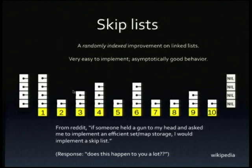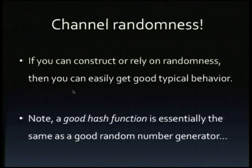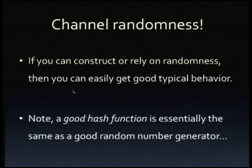There's a great Reddit quote on skip lists: 'If someone held a gun to my head and asked me to implement an efficient set or map storage, I would implement a skip list.' The response: 'Does this happen to you a lot?' The lesson from skip lists is: channel your randomness. If you can construct or rely on randomness in your dataset or algorithm, you can easily get good typical behavior, even if worst-case behavior when you analyze the algorithm is really bad. A good hash function is essentially the same as a good random number generator — it takes a seed and generates a number basically completely unrelated to the seed. Good hash functions are essentially random and unpredictable.